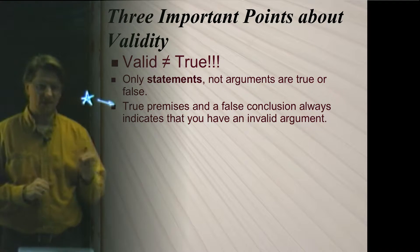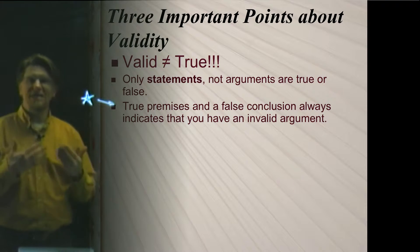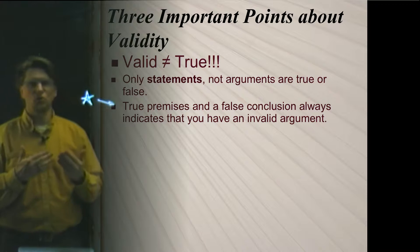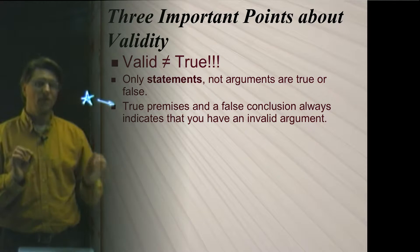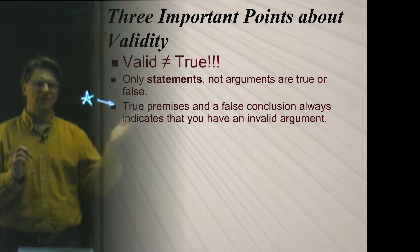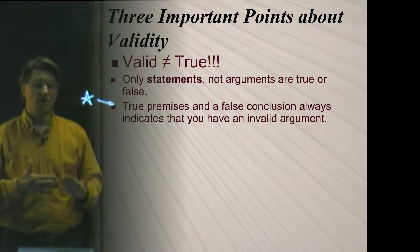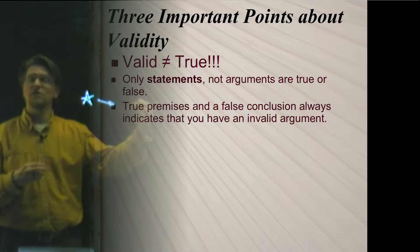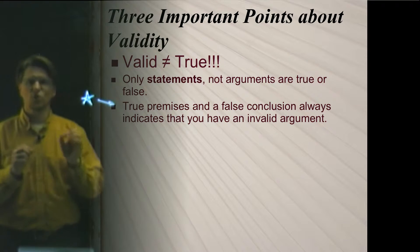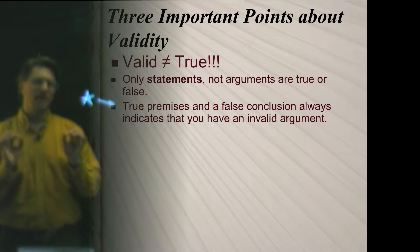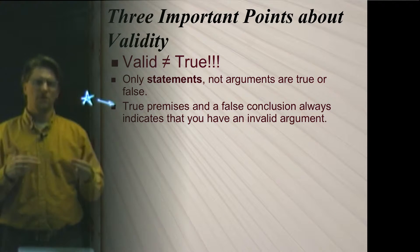It has to be invalid. And this is because validity means that if the premises are true, the conclusion would be 100% guaranteed to be true. So if you have an argument with true premises and yet the conclusion is false, that argument is doing a horrible job of guaranteeing the conclusion is true because, of course, it is false. And so that's a sure sign right off the bat that what you're looking at is an invalid argument.